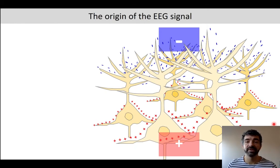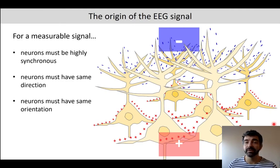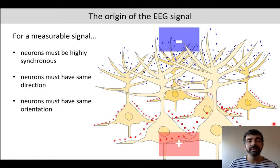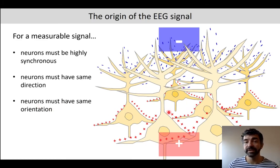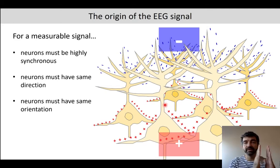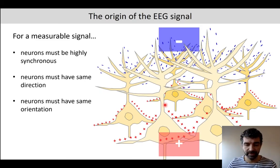There are three prerequisites for that to happen. First, the neurons must be highly synchronous — they must fire at the same time, which is often the case given how neurons are connected to one another. Second, neurons must have the same direction of the dipole — for example, all having a net negativity at the dendrites and a net positivity at the soma. Third, they must also have the same orientation, meaning the actual alignment of the neurons in the tissue. For example, they could be all aligned in one direction, or aligned in all different directions.